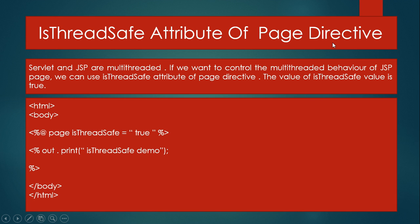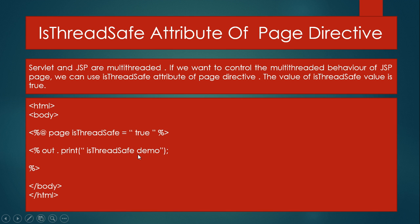The isThreadSafe attribute of the page directive: Servlet and JSP are multi-threaded. If we want to control the multi-threaded behavior of a JSP page, we can use the isThreadSafe attribute of the page directive. The value of isThreadSafe is true, meaning it works with multi-threaded behavior. If you change the value to false, it serializes the requests, meaning it handles only one request from the user at a time. Using the declaration tag and the implicit object 'out', we call the print method and the information is printed on the screen.